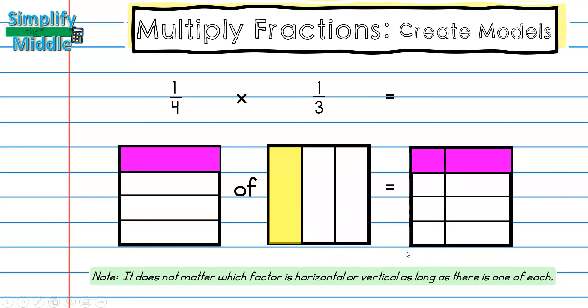So I'm going to put that right here: one line, two lines. Next, because I only shaded this column, I'm going to pretend like these rows are not here and shade just this one column. And this will give me my product. Here I only have one that has both shadings, but I have 12 total boxes, so that gives me a fraction of one-twelfth.